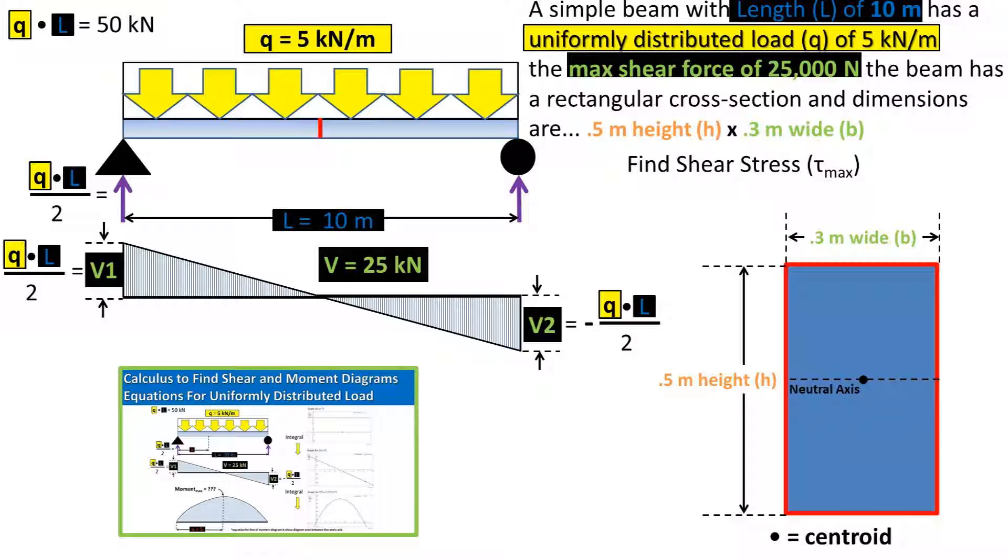To complete this problem, we'll be using the term centroid, which is the center of area for a shape. This can be found using tables. And the neutral axis, which is a horizontal line that passes through the centroid of a cross section when subjected to pure bending, or no axial force on the beam.